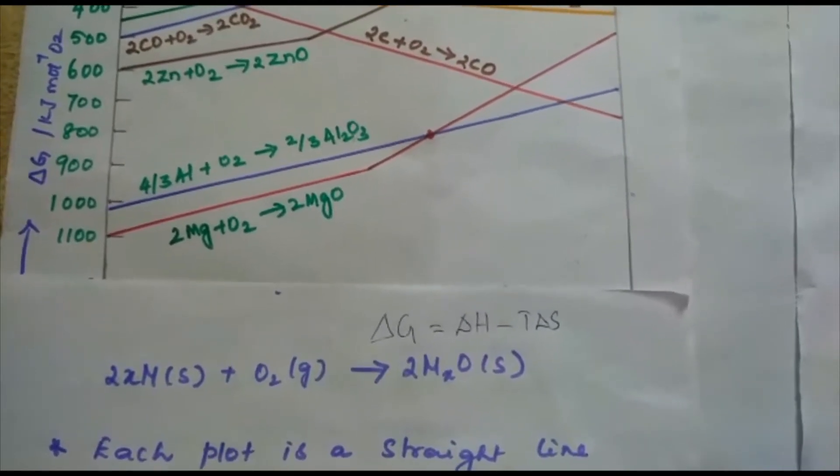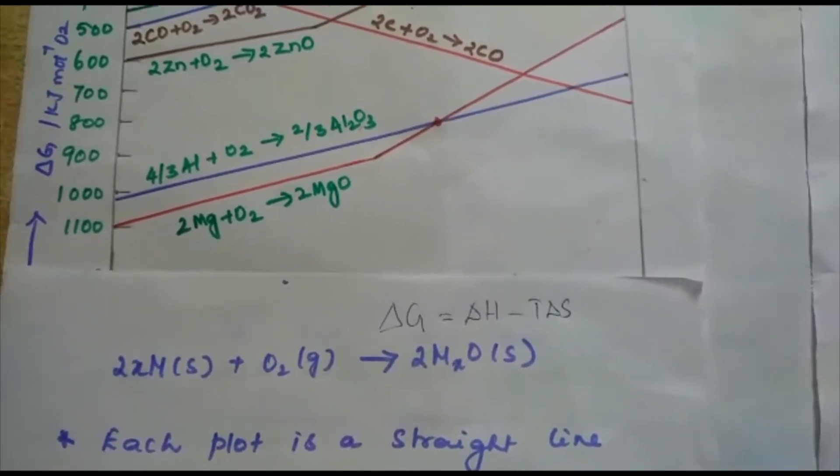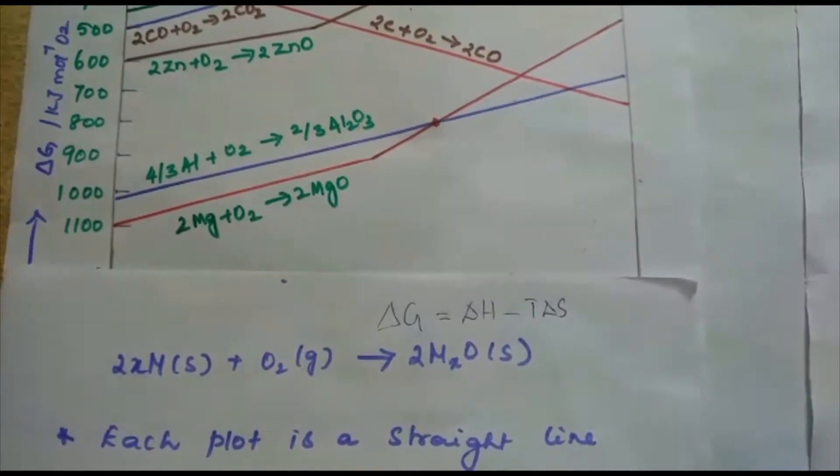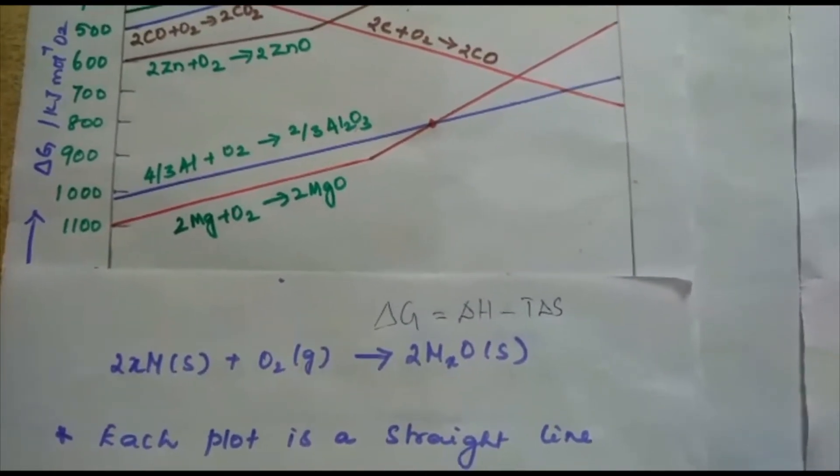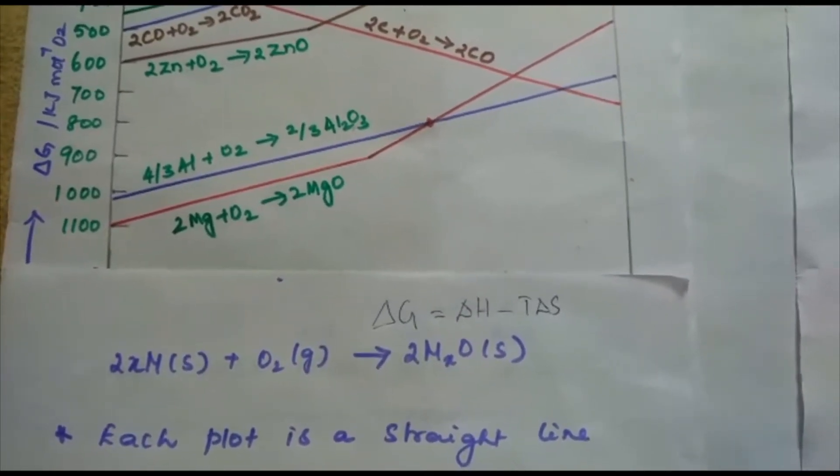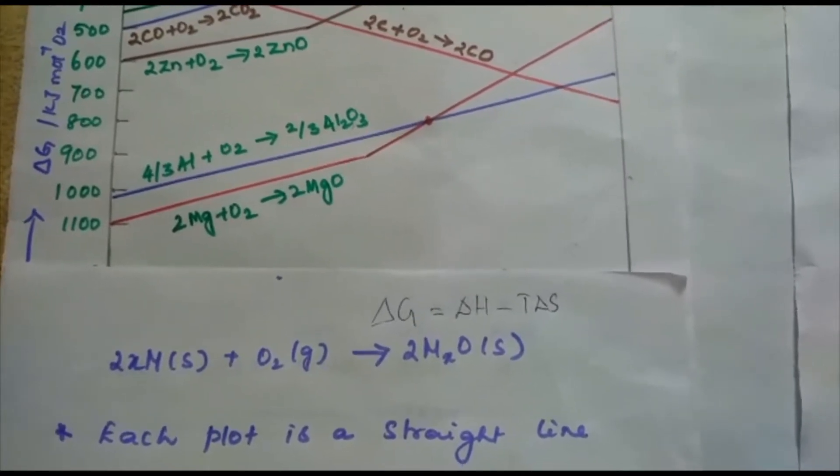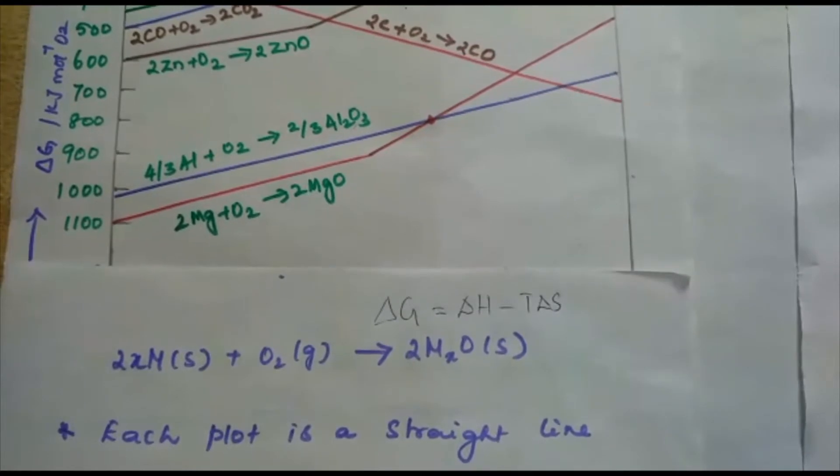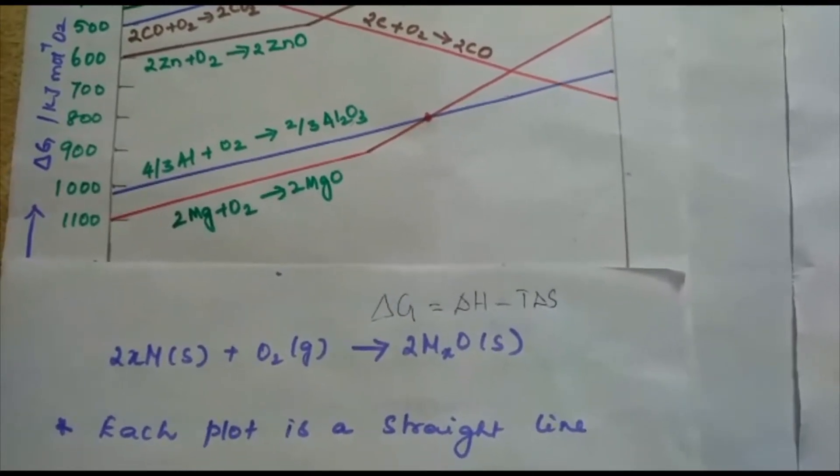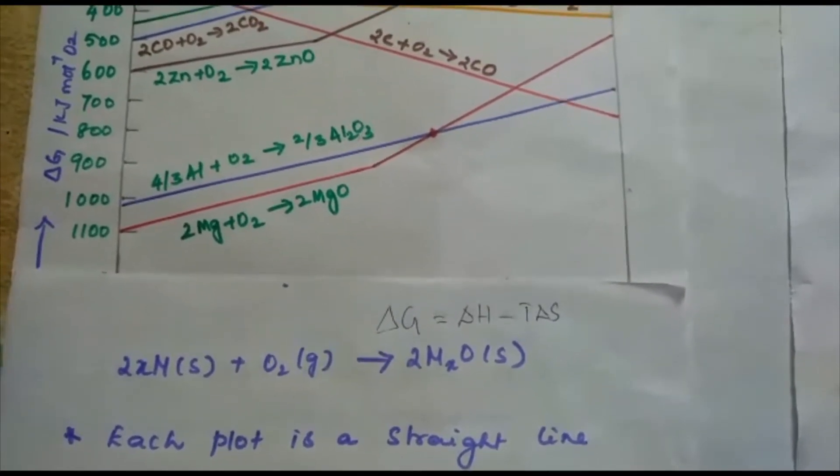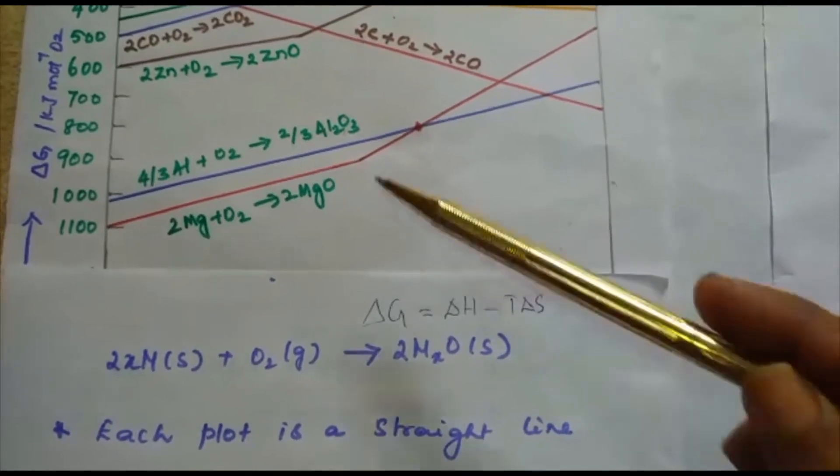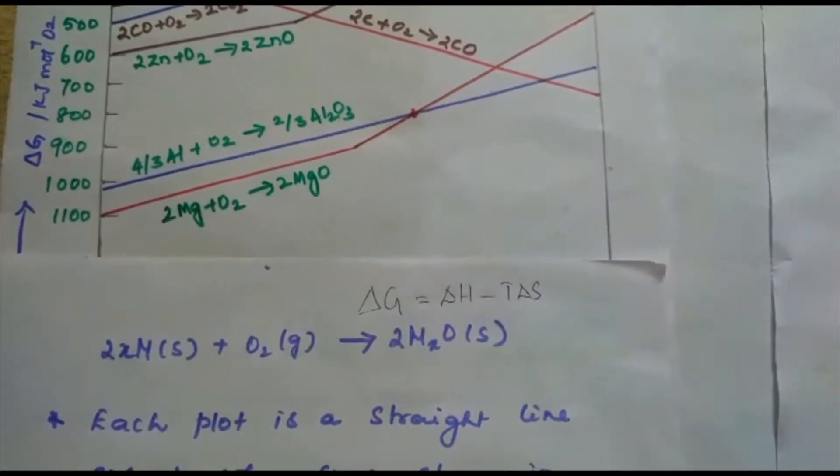Subsequently, delta G shifts towards higher side despite rising temperature. Normally, delta G decreases with increasing temperature. The result is positive slope in the curve for most of the reactions shown above for the formation of MxO.